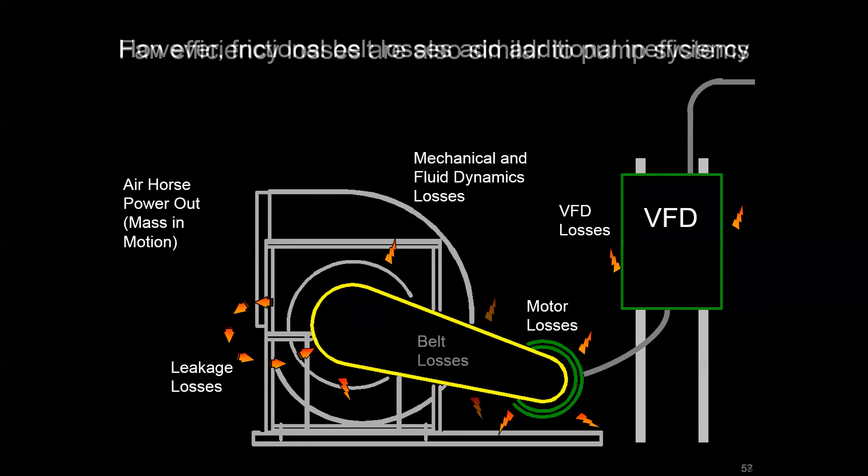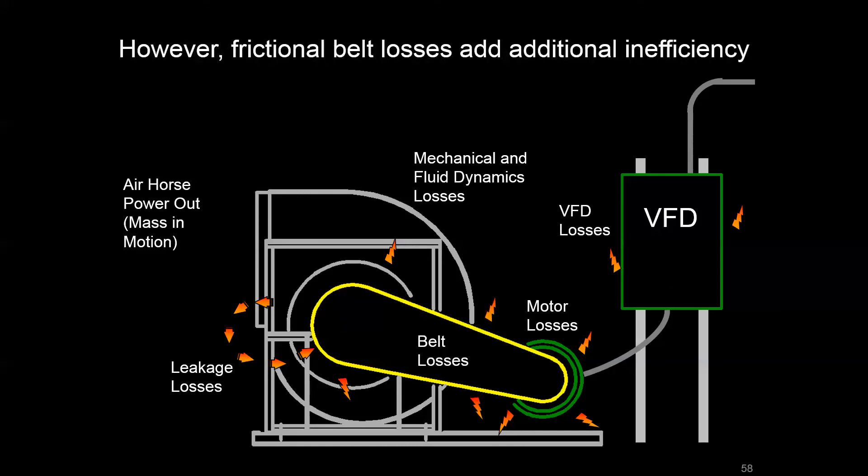Mechanical losses, electrical losses. There's one extra component that's typically going to be in these fan systems, unless it's an inline or axial fan—there's going to be typically a belt. So the motor doesn't directly drive the fan shaft, but they're connected by this belt system, and there's going to be friction losses associated with that.